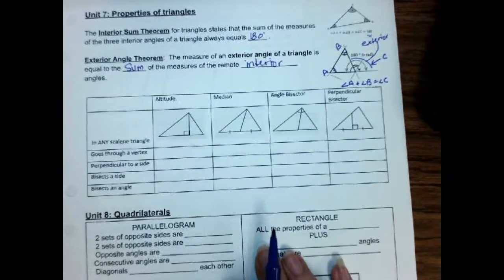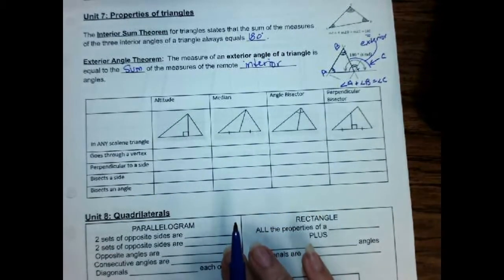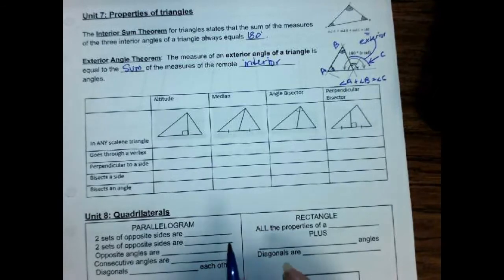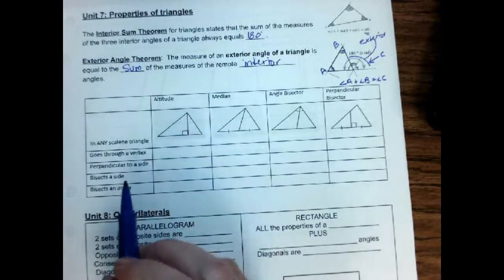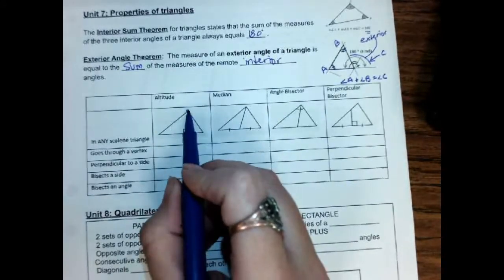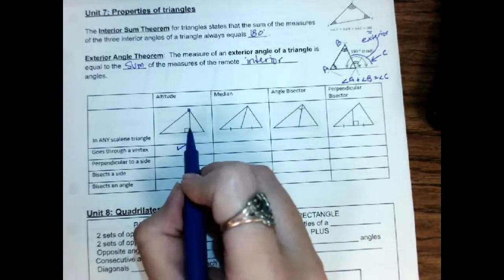Then, we also talked about these special lines and triangles. You might recognize this. This came right off your notes. An altitude looks like this. It goes through the vertex at the top, and it's perpendicular to one side.